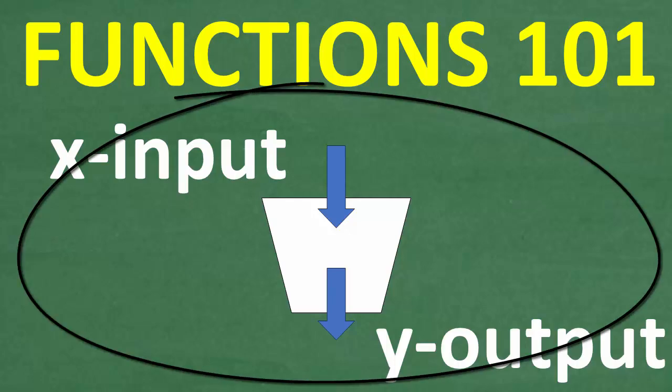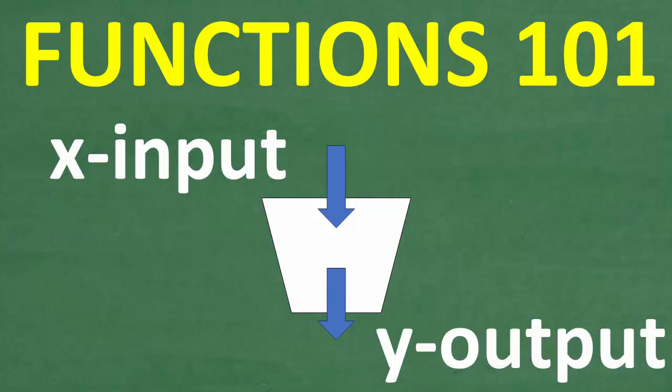So what do I have here? This is kind of a classic model to talk about a function. We call this a function machine — this is my basic sketch of a function machine. We're going to use this model, along with a couple other things, to get into functions.